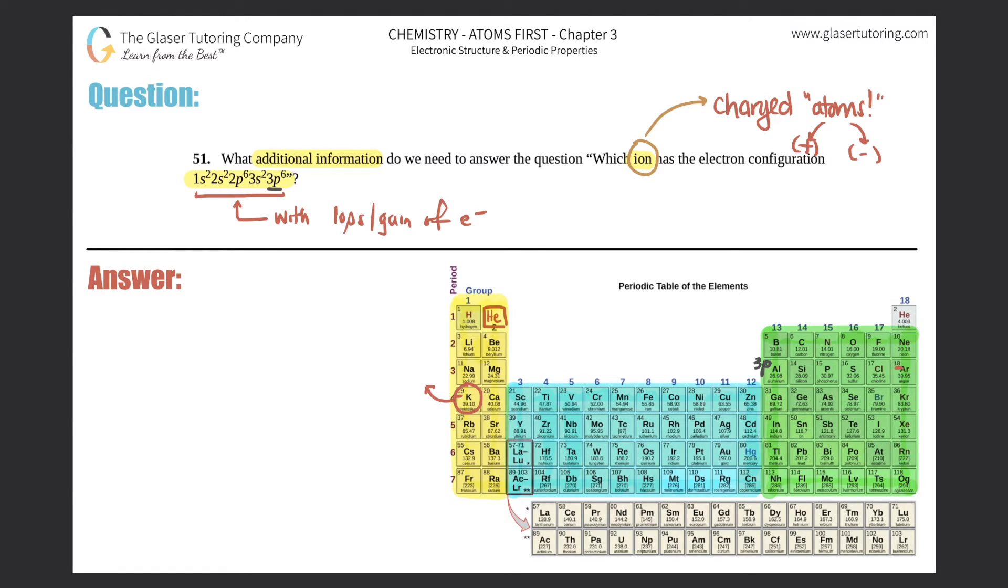So what are we getting at? What additional information do we need? We need the charge of the ion. Without the charge of the ion, we would have no idea who this ion is.